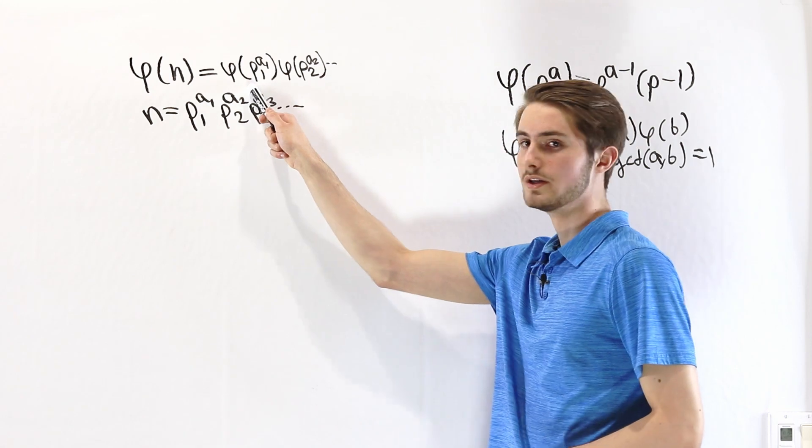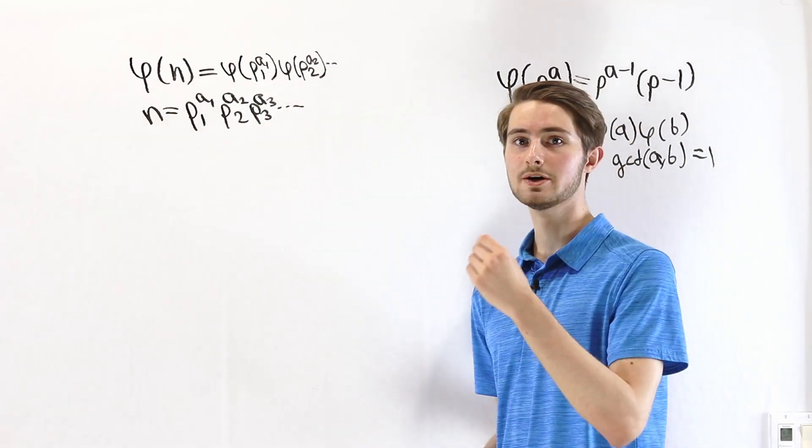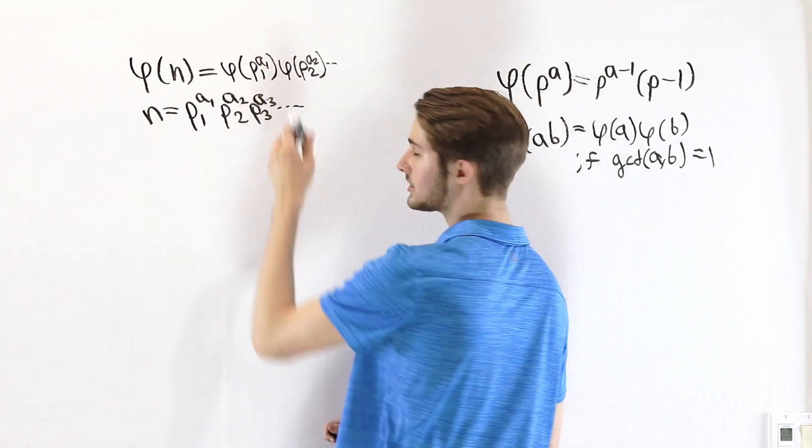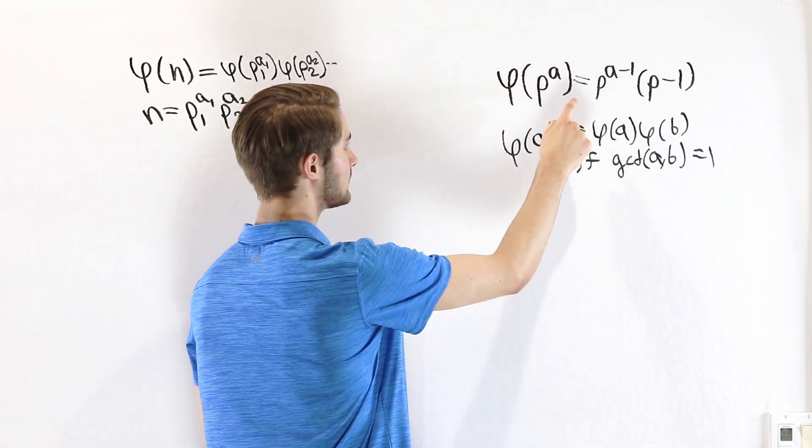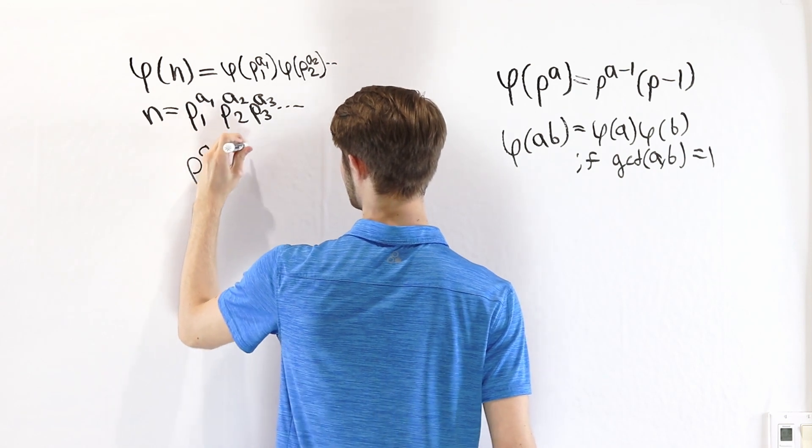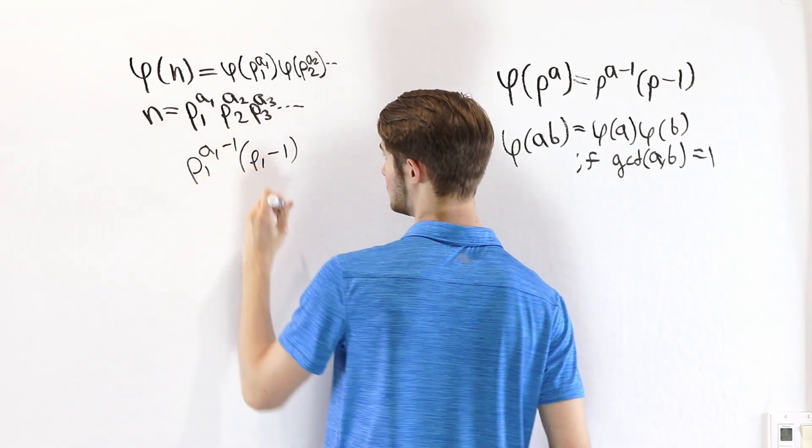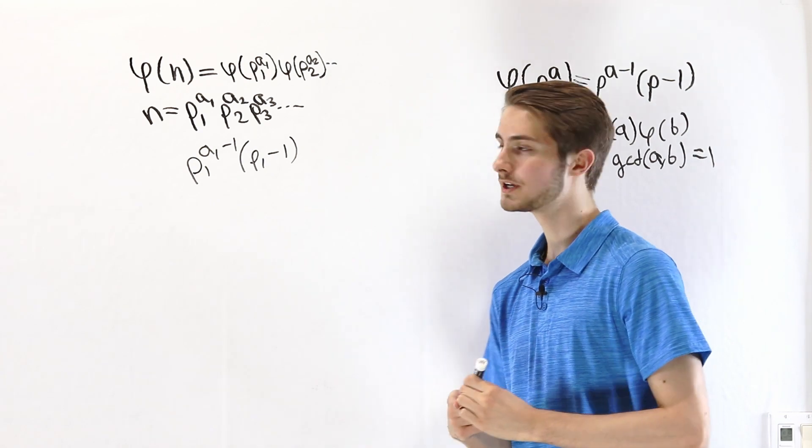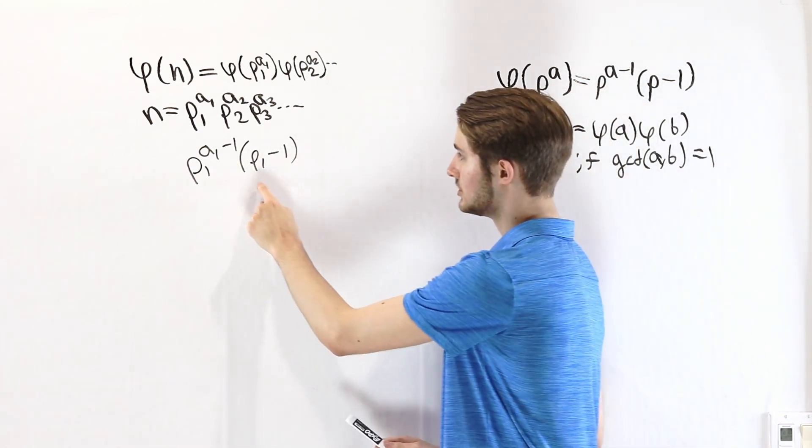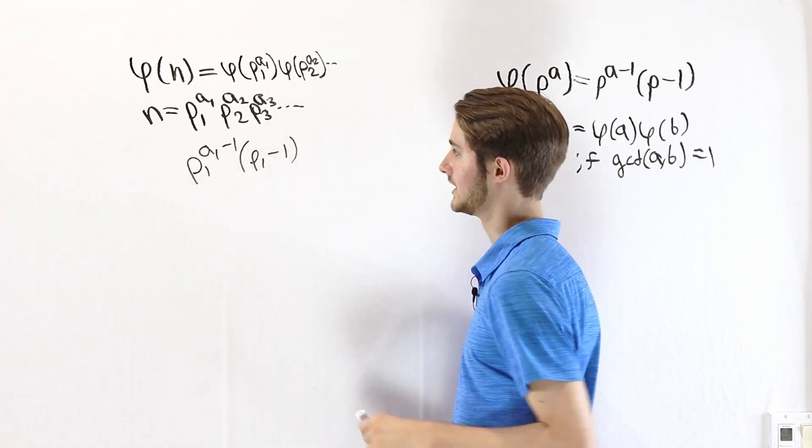But we know how to do the totient function of a power of a prime number. For example, if we're looking at p1 to the power of a1, that's going to be p1 to the a1 minus 1 times p1 minus 1. Now, before we go through all the rest of the factors, I'm going to do a little bit of simplifying on this right here.